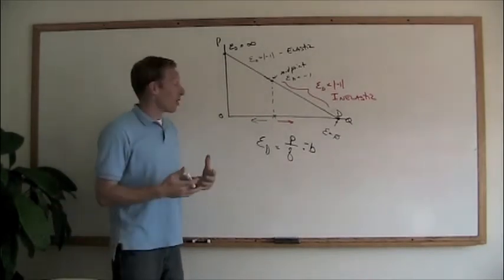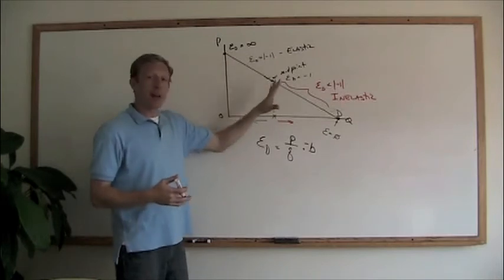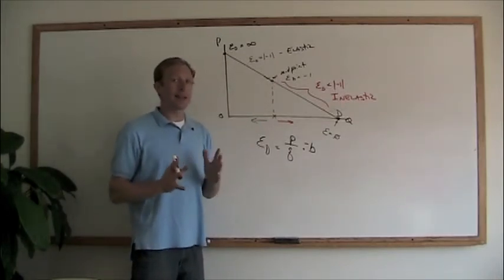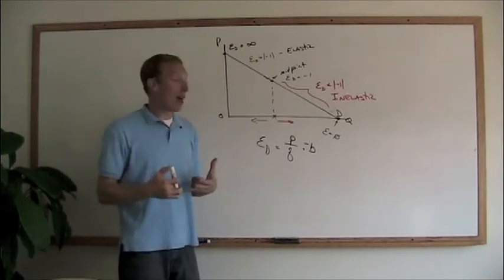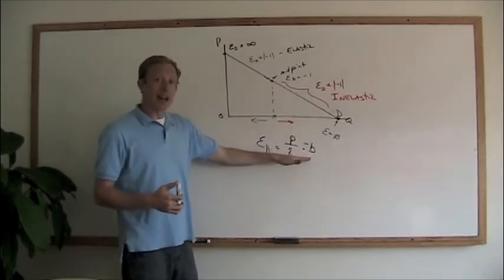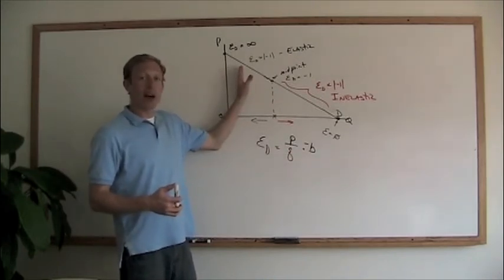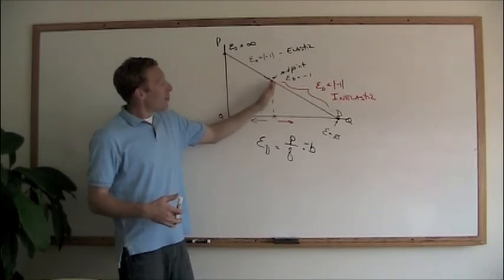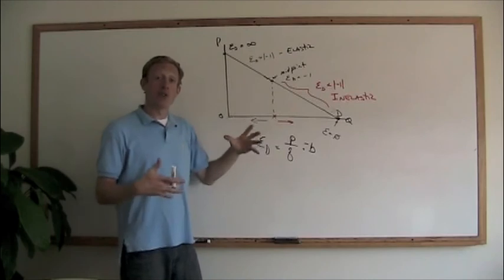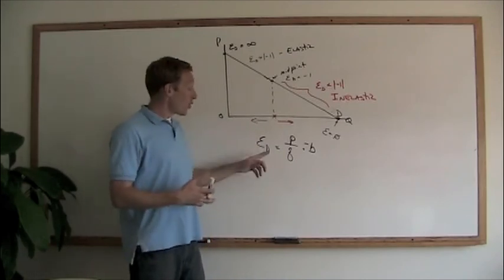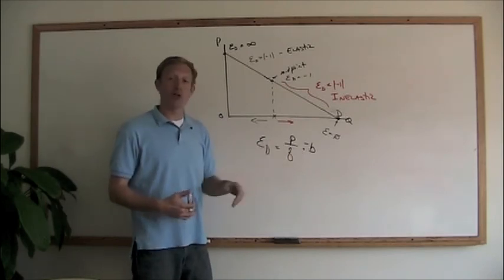So when we're on a demand curve and we're looking at elasticity, a linear demand curve has a constant slope but not constant elasticity. That's something we don't really get into in principles all that often. Slope is not elasticity. Elasticity tells us the percentage change of one value in terms of another. And we have a point in the middle, the unitary elastic point, that divides that demand curve into two different segments. Now you have an equation that can help you find the elasticity of demand if you have a price and quantity combination and you know the slope of the line.